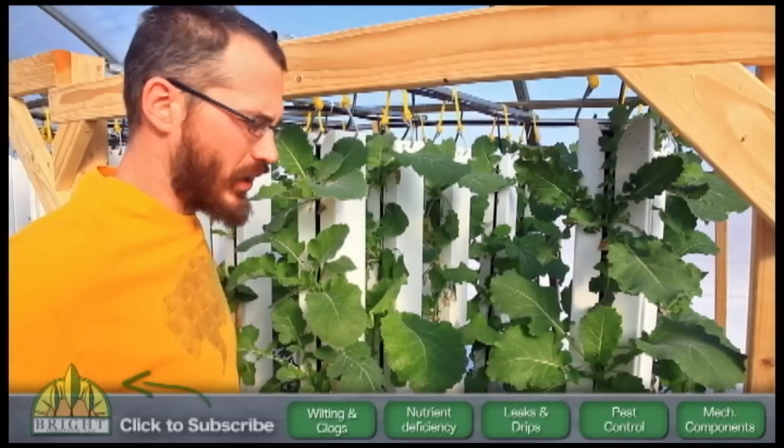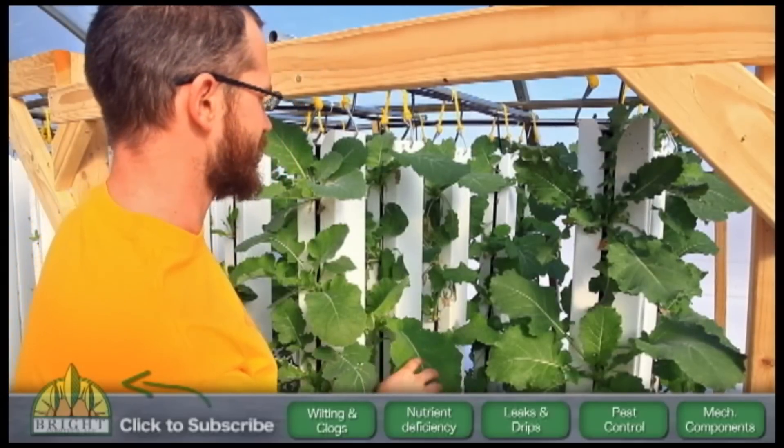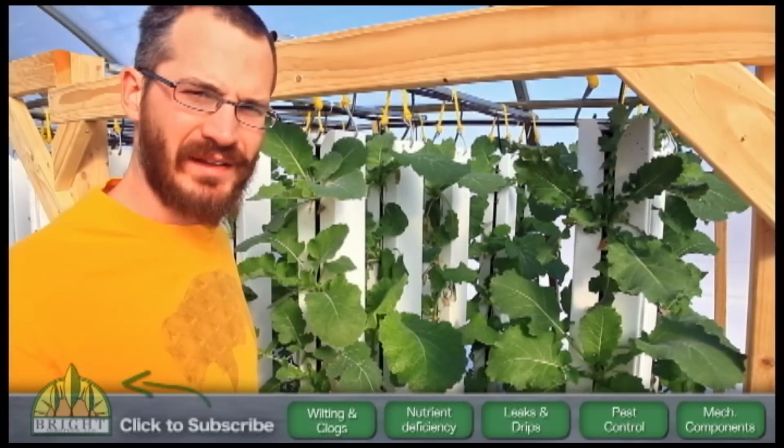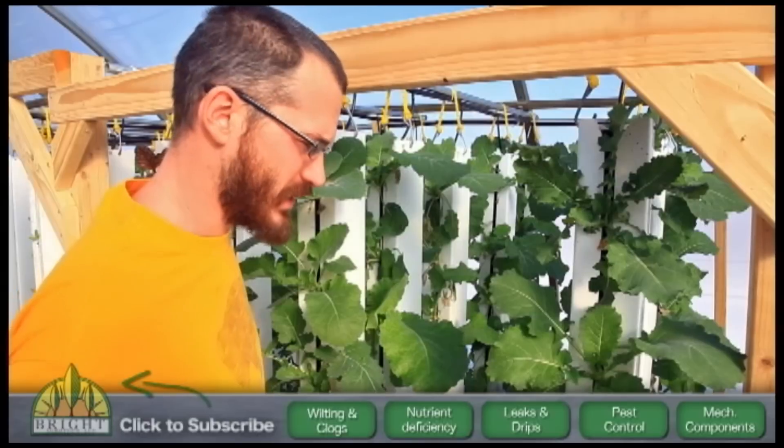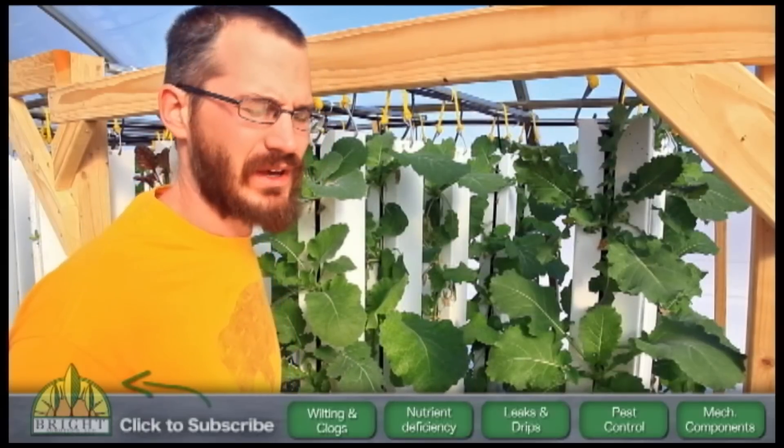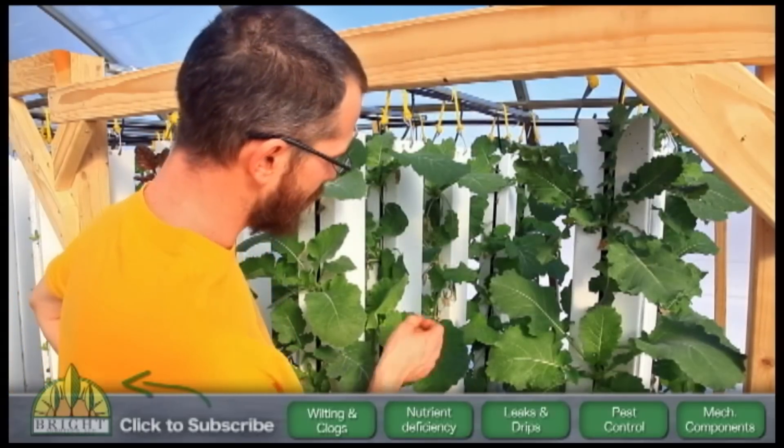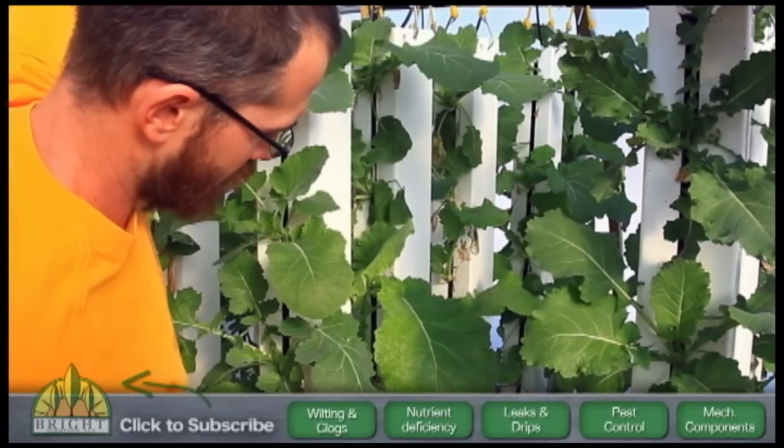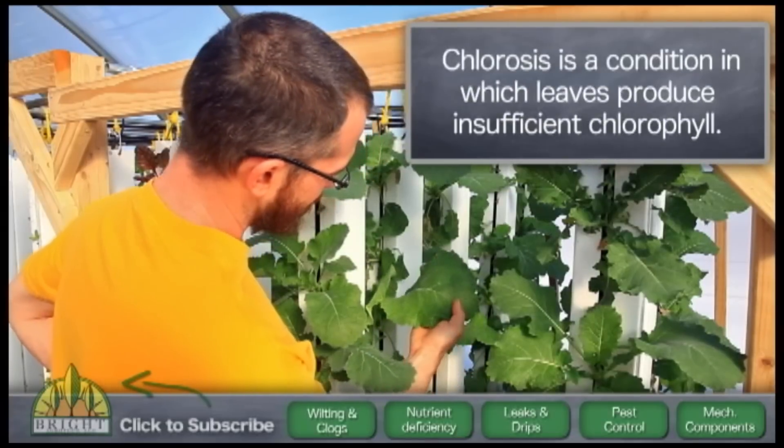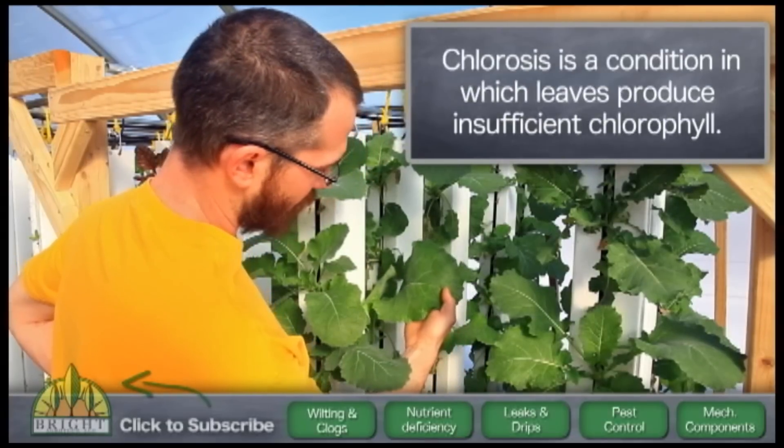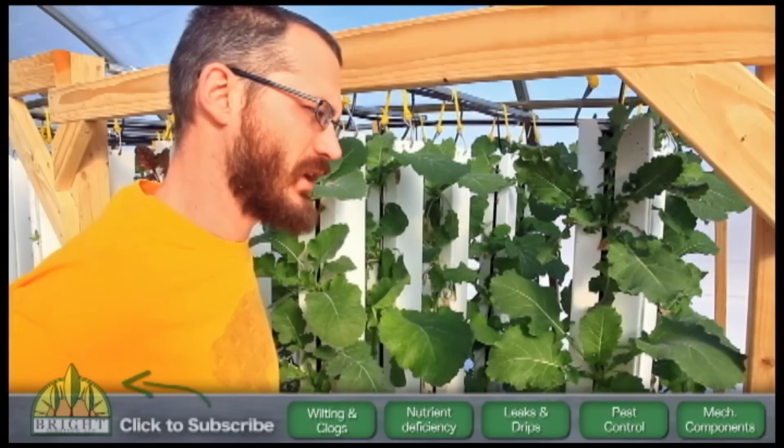So another thing that we're always checking out is nutrient deficiency. So in aquaponic systems, iron tends to be a little deficient. And there are a few plants that show iron deficiency sooner than everything else, in my experience. And collards are one of them. So collards are kind of one of our telltale plants. They tell us when our iron dosing is behind schedule or when something's happening to the iron in our system. There you can see a little bit of iron deficiency in these plants. It's just that chlorosis there. So this is also another thing that we keep our eyes on.